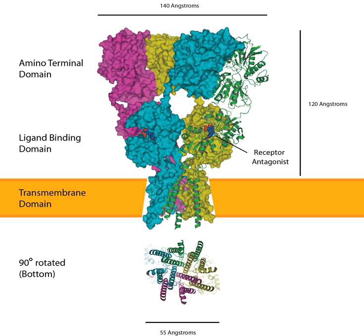Transmembrane AMPA receptor regulatory proteins (TARPs) are a family of proteins that associate with AMPA receptors and control their trafficking and conductance. CACNG2 is one such protein and is found to bind AMPA receptors in the perisynaptic and postsynaptic regions. The role of stargazin in trafficking between the perisynaptic and postsynaptic regions remains unclear. However, stargazin is essential for immobilizing AMPA receptors in the PSD by interacting with PSD-95. PSD-95 stabilizes AMPA receptors to the synapse, and disruption of the stargazin–PSD-95 interaction suppressed synaptic transmission.